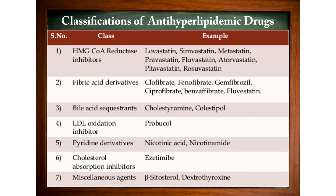HMG-CoA Reductase Inhibitors include: lovastatin, metastatin, pravastatin, fluvastatin, atorvastatin, and rosuvastatin.